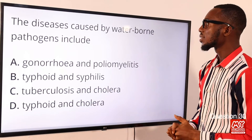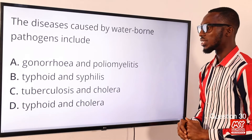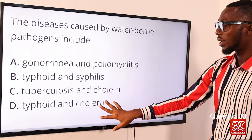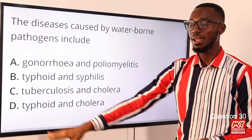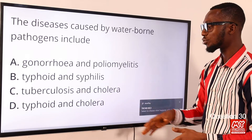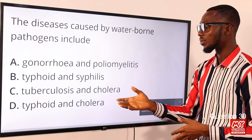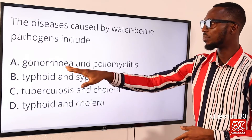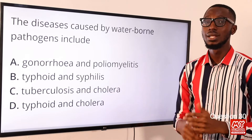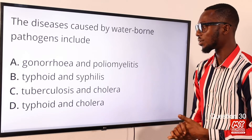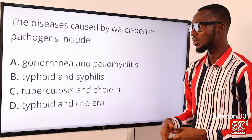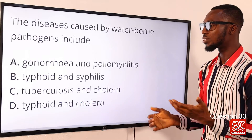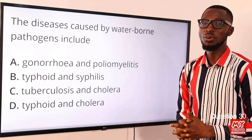Question 30. The diseases caused by waterborne pathogens include typhoid and cholera. Cholera is caused by Vibrio cholerae and typhoid is caused by Salmonella typhi. These are spread through water contaminated with faeces. Gonorrhea and syphilis are through direct contact during sexual intercourse. Tuberculosis is caused by Mycobacterium tuberculosis and is airborne. The correct option is option D for typhoid and cholera.